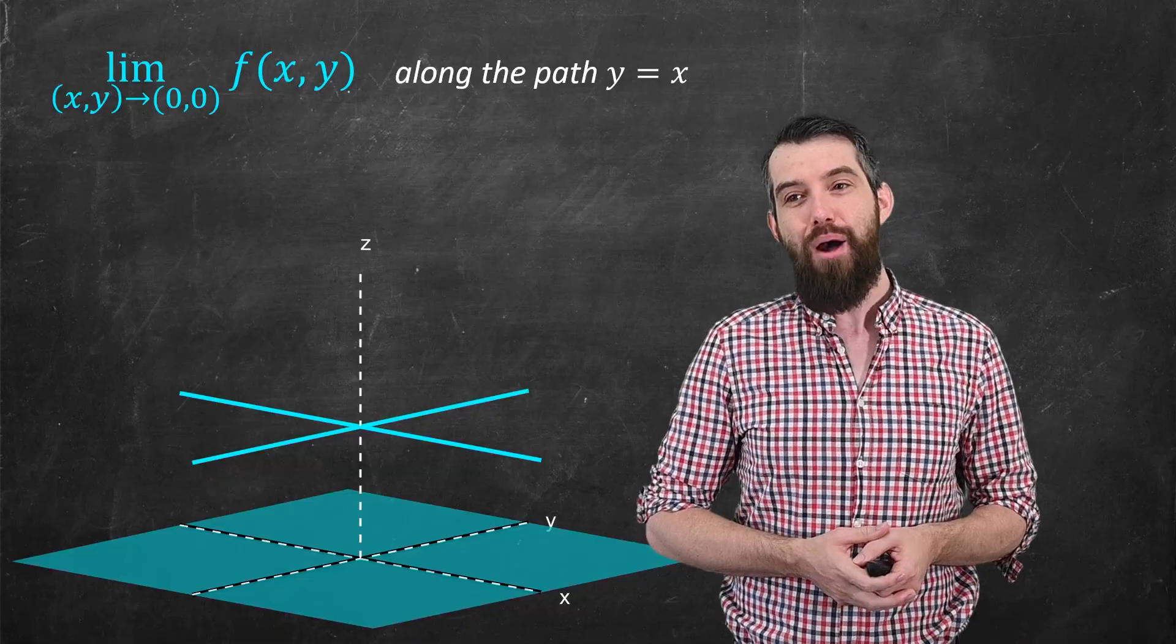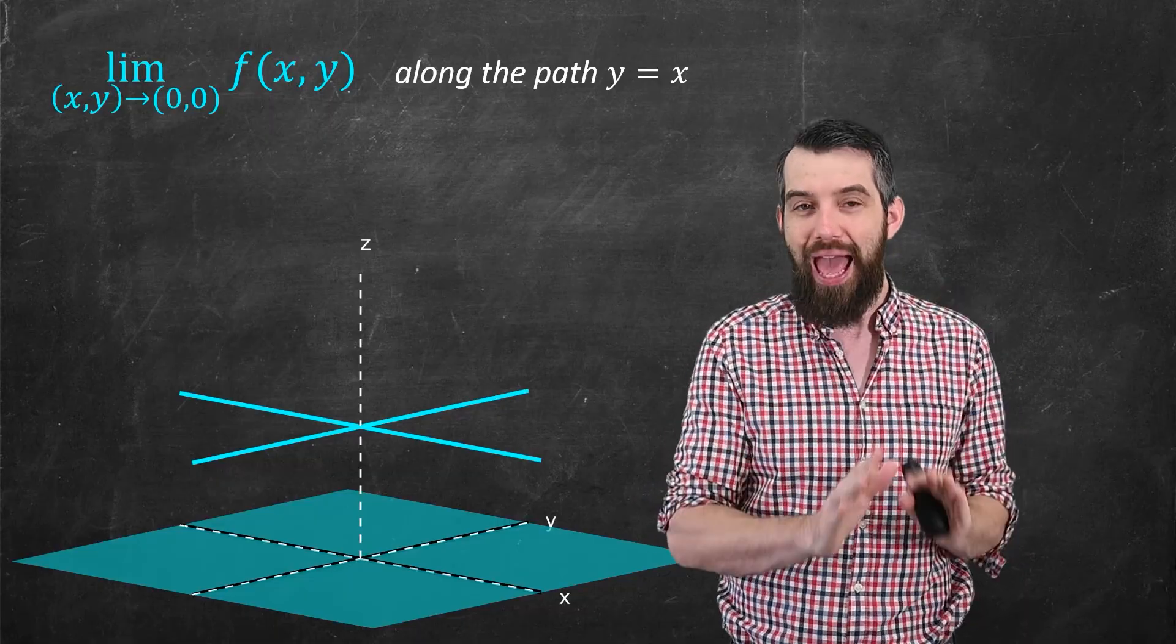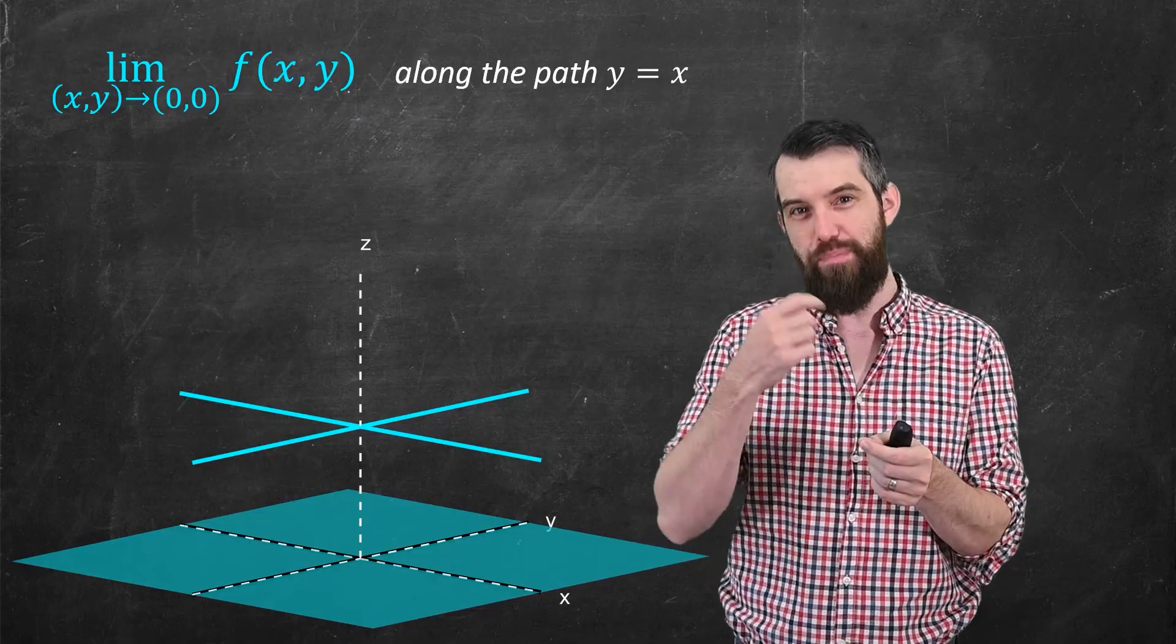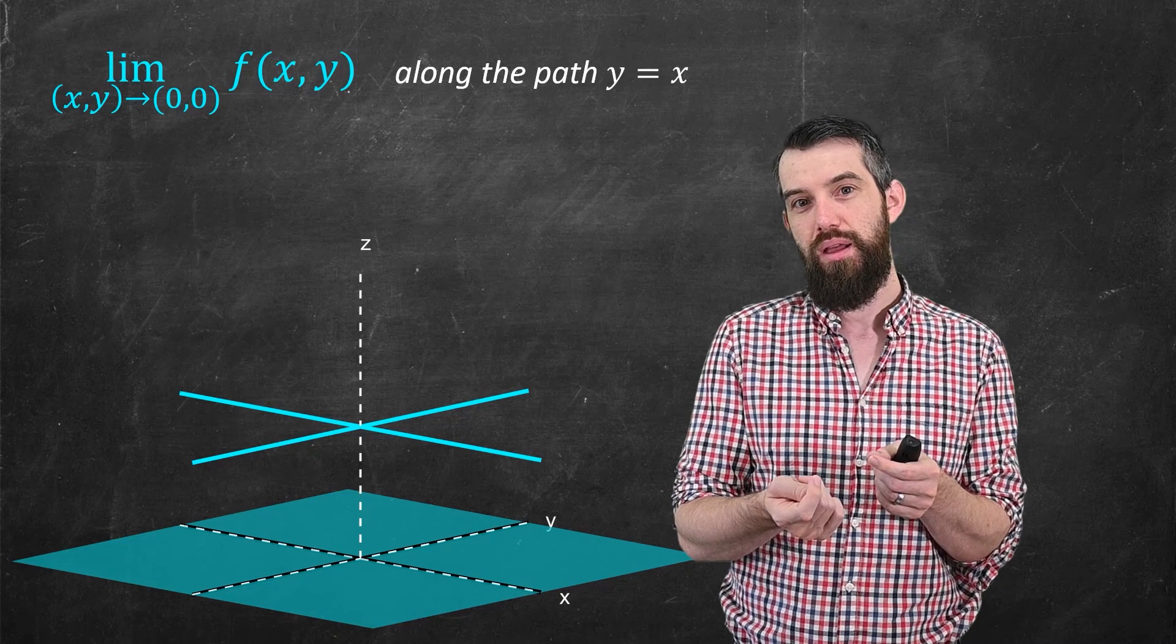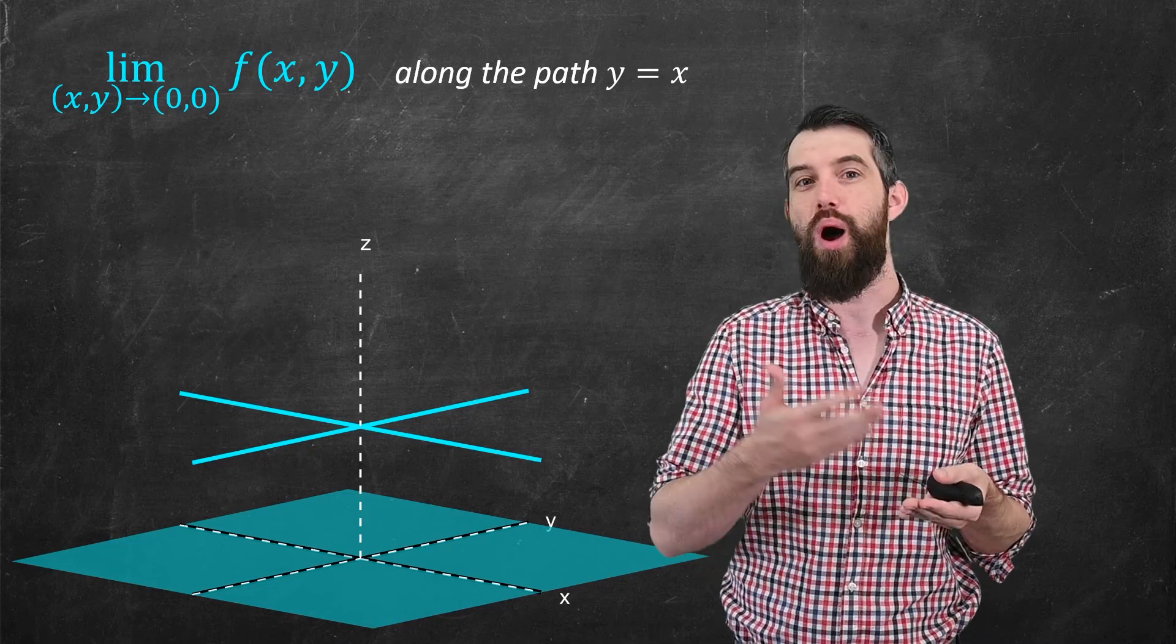Okay, let me do a different path, though. Now I'm going to take the path which has changed to be y equal to x instead. So these are numbers like (1,1), (1/2, 1/2), (0.1, 0.1). But what is f of a number like (0.1, 0.1)?